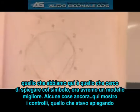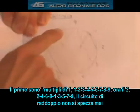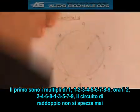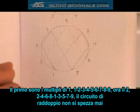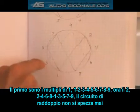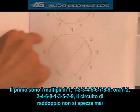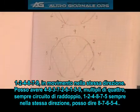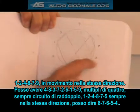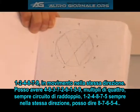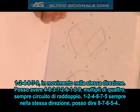Here I'm showing controls. My first one is in multiples of one: 9, 1, 2, 3, 4, 5, 6, 7, 8, 9 — the same thing you're seeing on the symbol up there. I could just as easily do a control of two: 2, 4, 6, 8, 1, 3, 5, 7, 9. Notice my doubling circuits never break — I still have 1, 2, 4, 8, 7, 5 moving in the same direction. I could have multiples of four: 4, 8, 3, 7, 2, 6, 1, 5, 9 — still my doubling circuits 1, 2, 4, 8, 7, 5, still moving in the same direction.